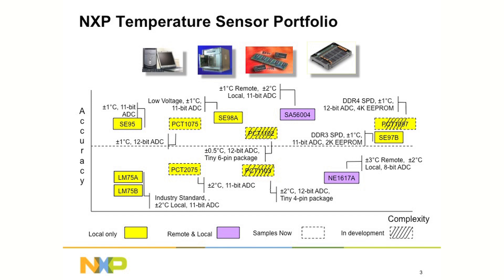NXP also offers the lowest operating voltage temperature sensor in the industry with a 1.8-volt device, the SE98A. An interesting NXP temperature sensor device includes 2K bits E-squared, which would be useful if a design needs to store manufacturing data or data log storage.